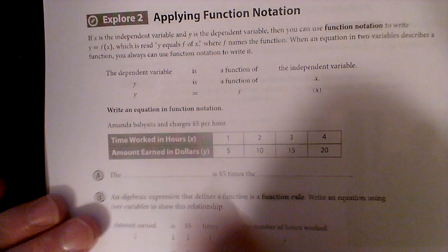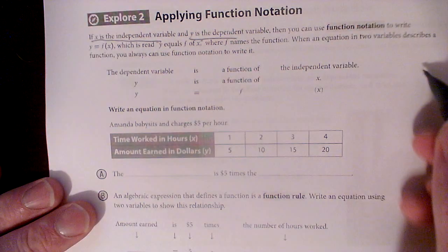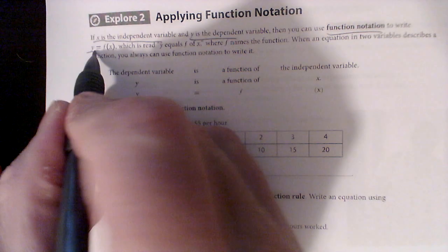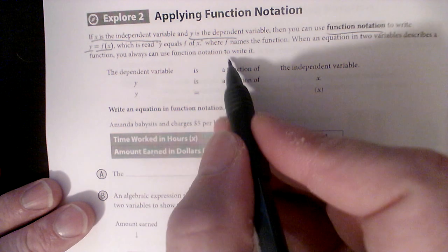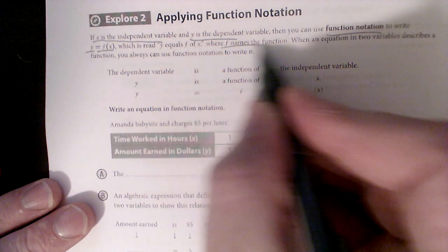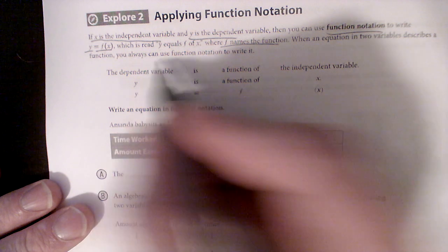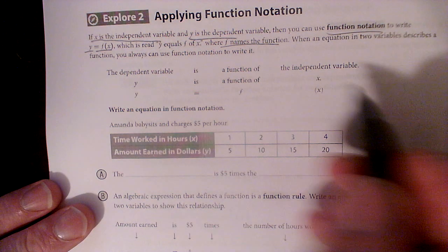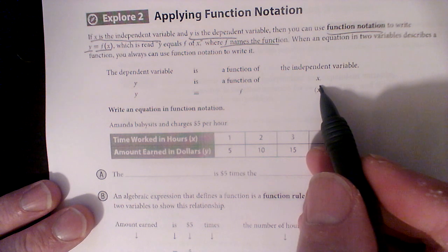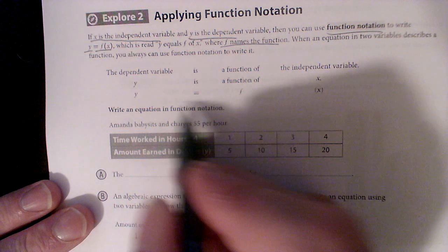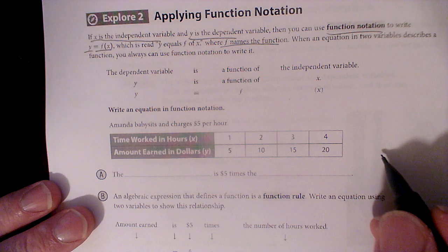If x is the independent variable and y is the dependent variable, and that's how it is all the time, you can use function notation to write y equals f of x. Read y equals f of x, where f names the function. When a function in two variables describes a function, you can always use function notation to write it. I can say y is a function of x, or I can say y equals f of x. Let's go down and do one.